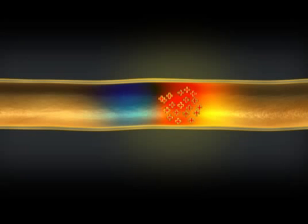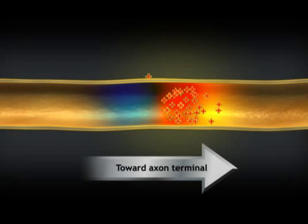In this way, the action potential migrates, like the fire on a fuse, toward the axon terminal, where it is delivered to another neuron.